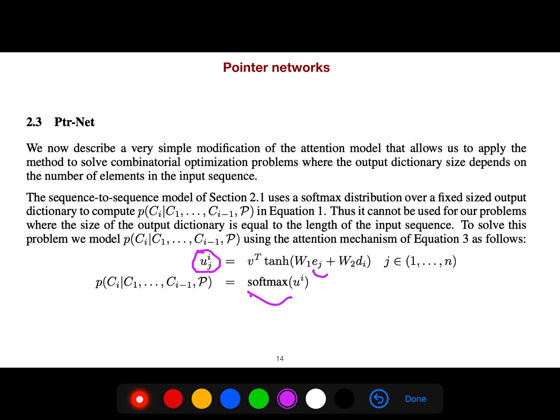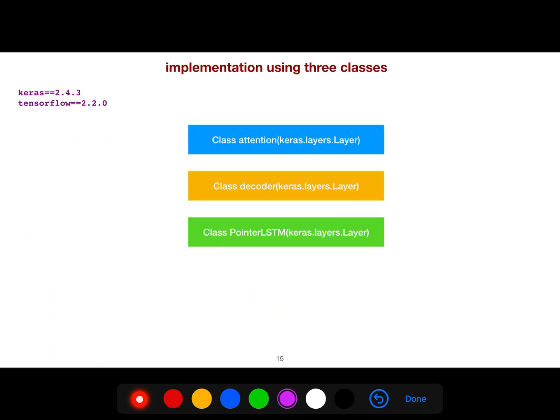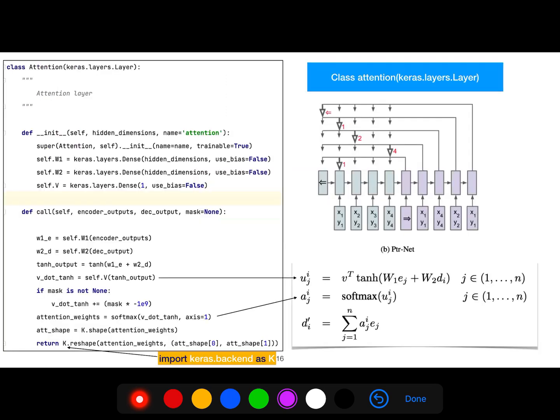We can implement this in Keras just using three modules: the first module is Attention, then Decoder, and Pointer LSTM. We are using Keras 2.4.3, and the attention class... instead of nn that we use in PyTorch, we are inherited from keras.layers.Layer.